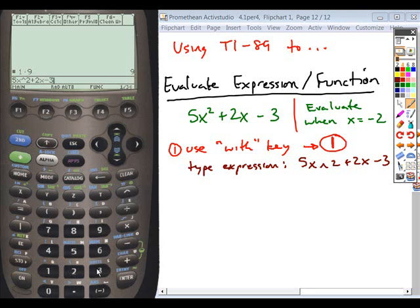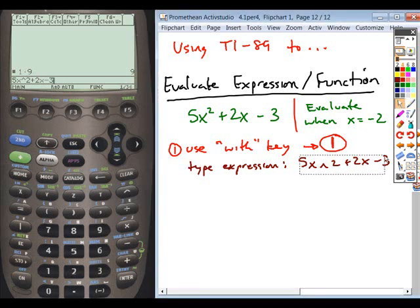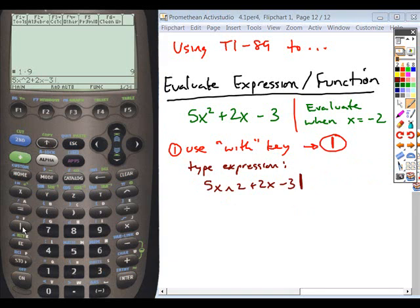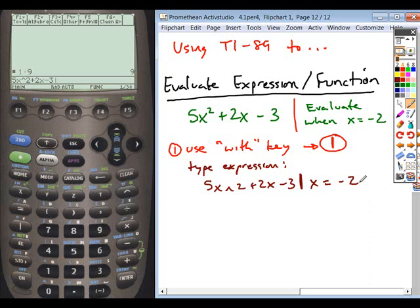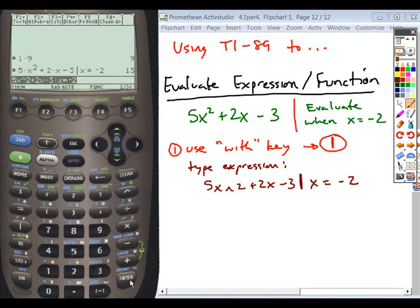Once you're done typing that expression, you follow it with the width key - this vertical bar right below the equals. Then you tell the calculator what you want x to be substituted in with. You'll identify x equals, so the x on the left side, equals right below it, then type in the number you want to evaluate with. Hit enter, and it gives you your answer of 13.